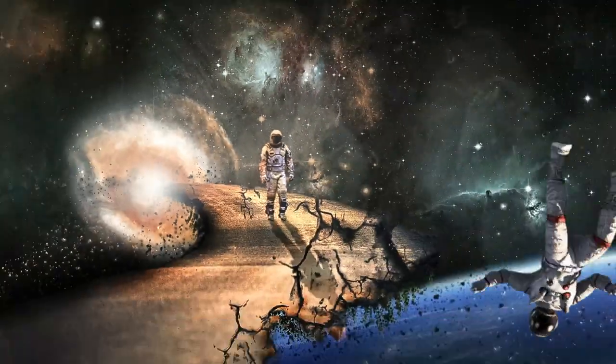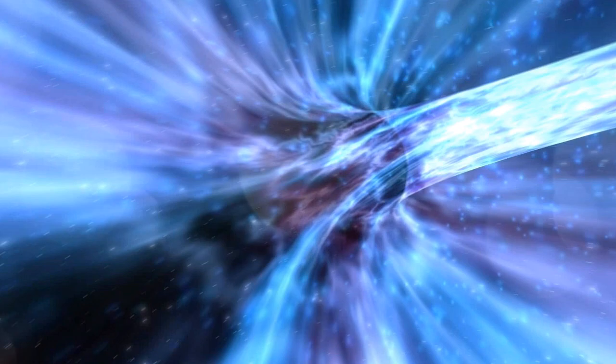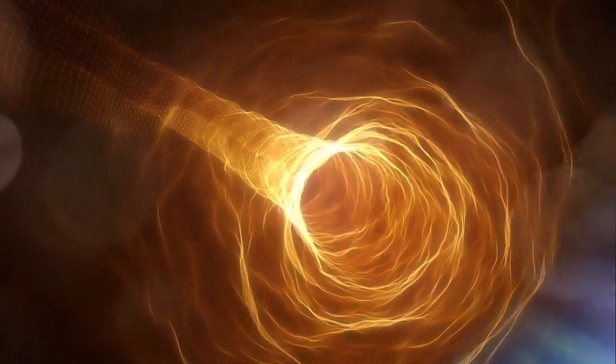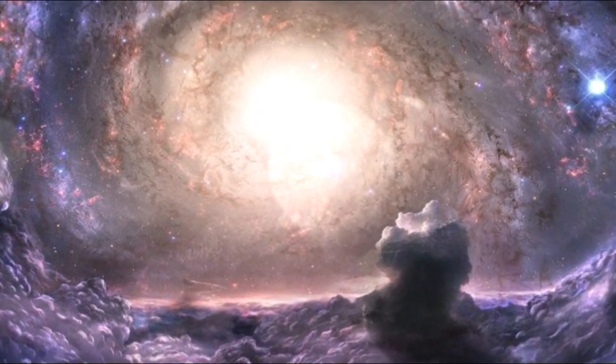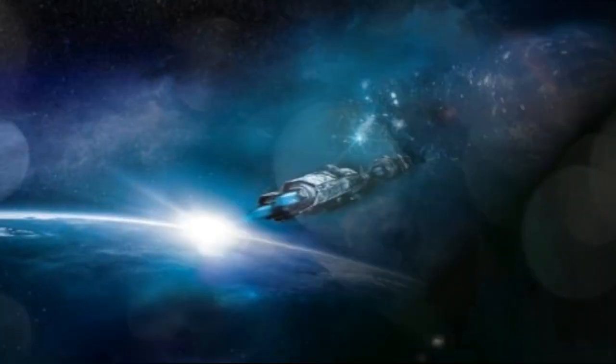We are going to learn about wormholes. A wormhole, or Einstein-Rosen bridge, is a speculative structure linking disparate points in spacetime, and is based on a special solution of the Einstein field equation solved using a Jacobian matrix and determinant.